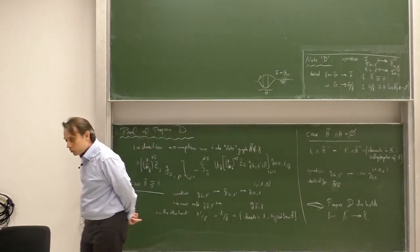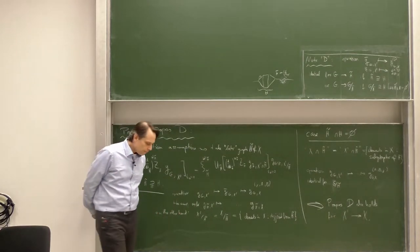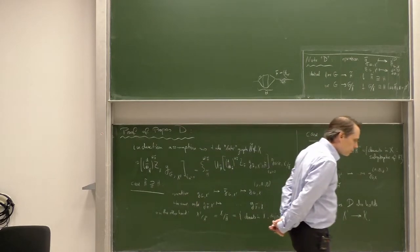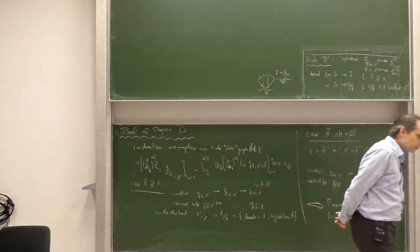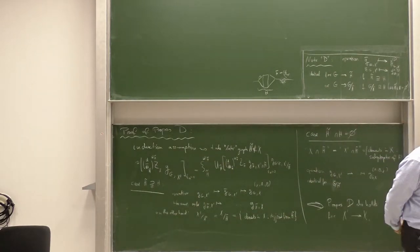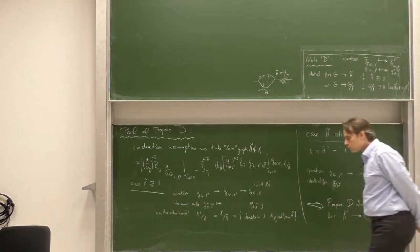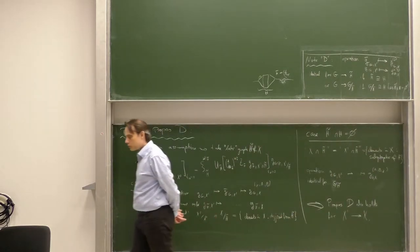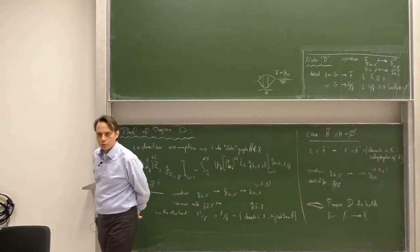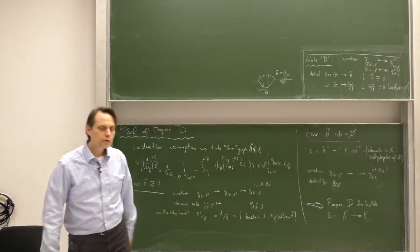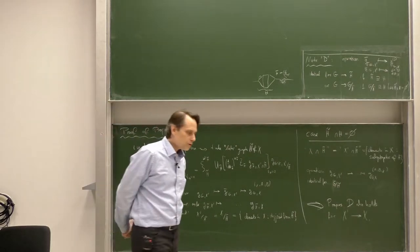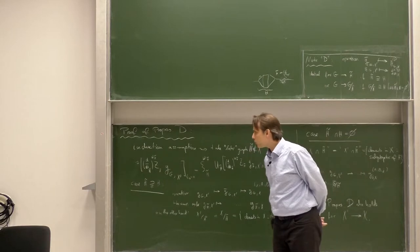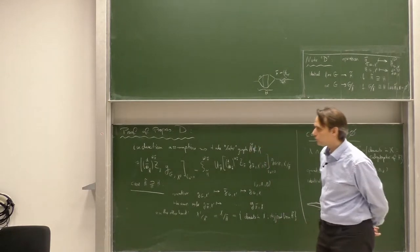All graphs become finite. All counterterms can be absorbed in Lagrangians. The Lagrangians are local. And therefore, our renormalization procedure in the end defines a viable quantum field theory in line with all the postulates of quantum field theory.